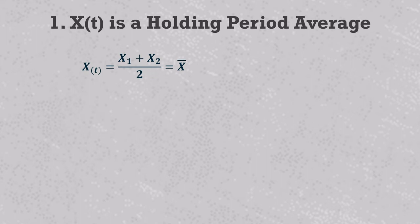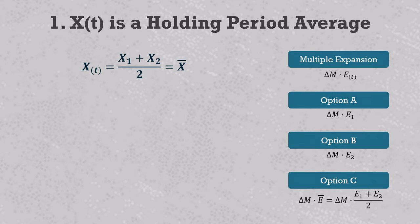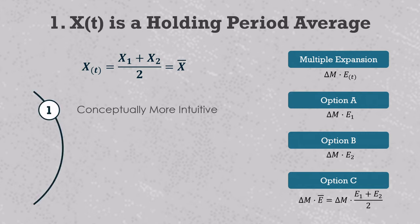A lot of models out there use entry or exit values for E sub T and M sub T rather than the averages. Technically you can do that and still get the value drivers to add up to the right total, but holding period averages are superior for several reasons. Consider three possible formulas for multiple expansion: Option A uses entry EBITDA for E sub T, Option B uses exit EBITDA, and Option C uses the average of entry and exit EBITDA as we recommend. The first argument for Option C is that it makes more intuitive sense — which EBITDA is most representative of overall holding period conditions? Usually it will be an EBITDA in the middle, and Option C provides that because the average of two numbers always falls between the two.